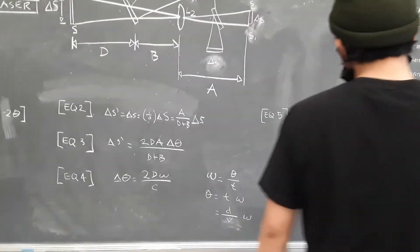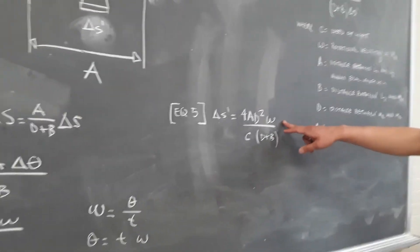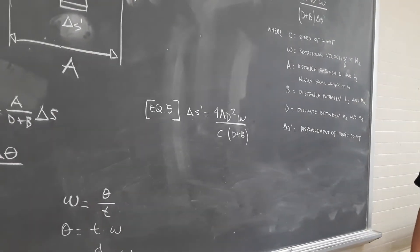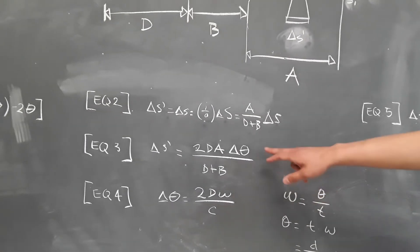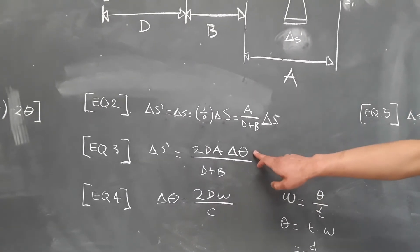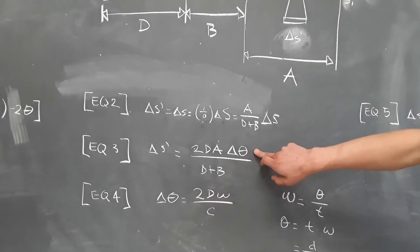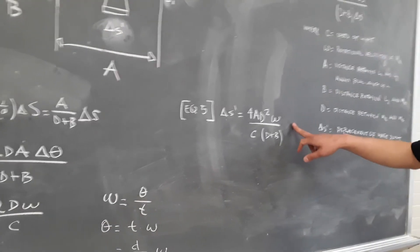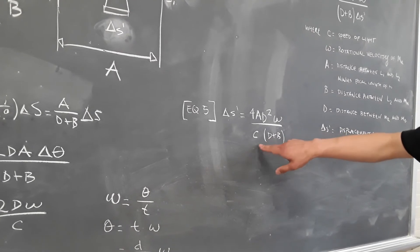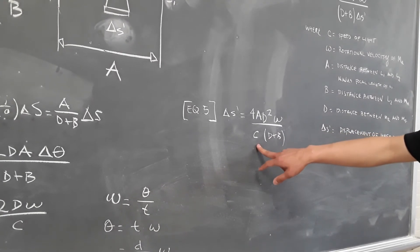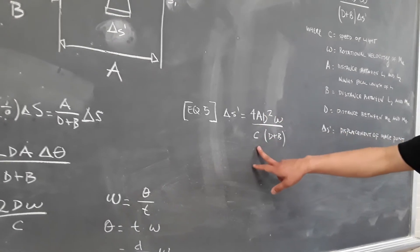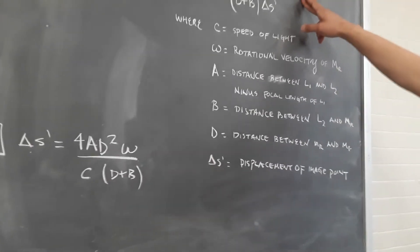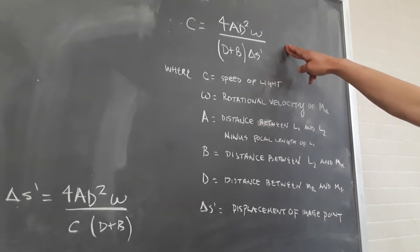In our fifth equation, we are simply substituting equation four into equation three. In equation three we have delta theta, and we substitute this expression in for it — that's how we get equation five. In equation five, we have little c representing the speed of light. We rearrange the variables to solve for c, which is how we get equation six.